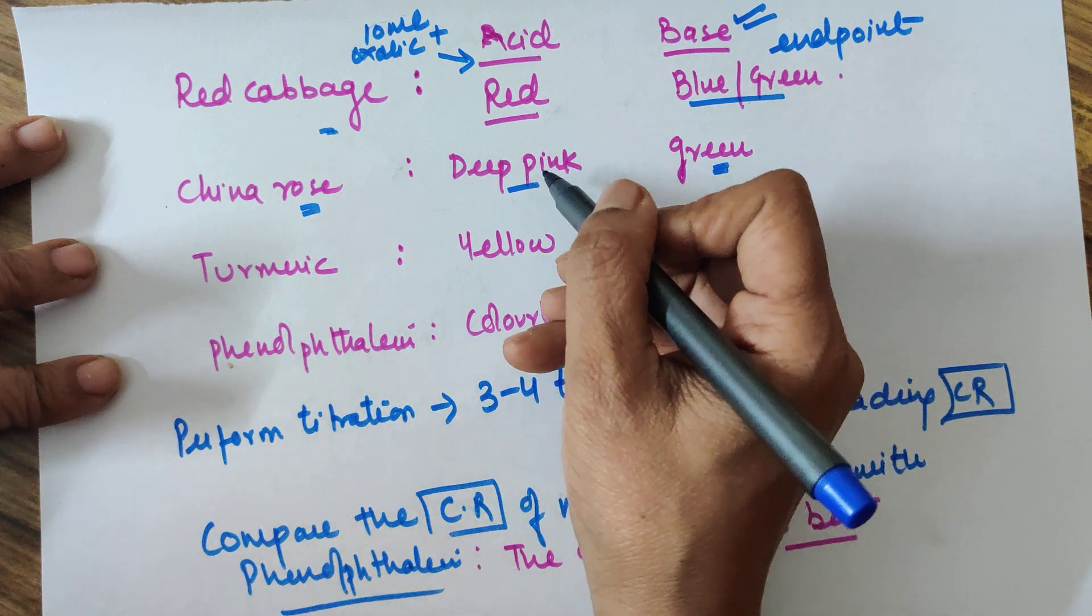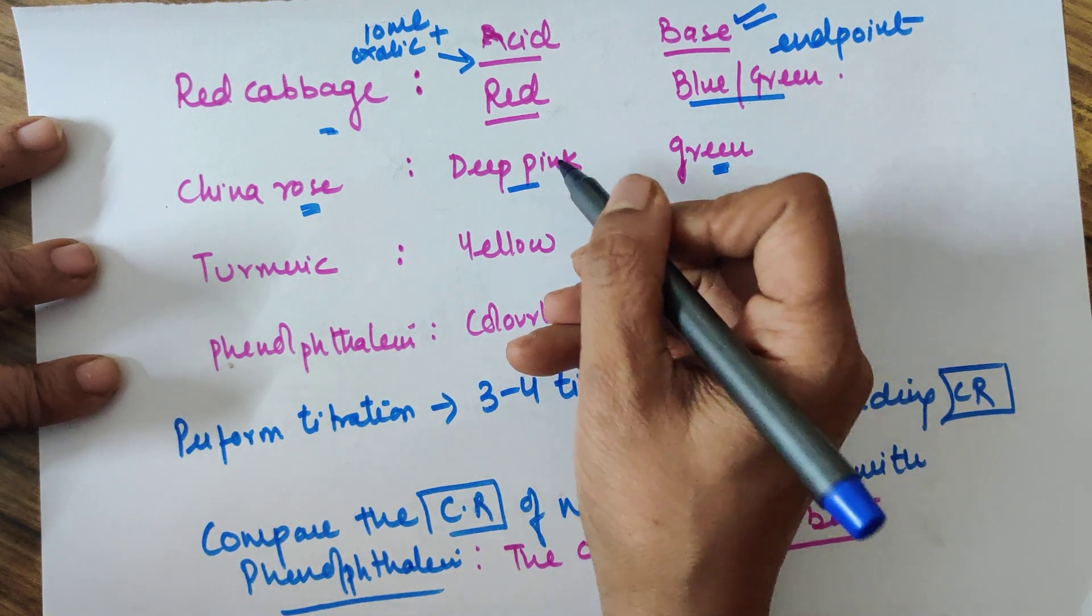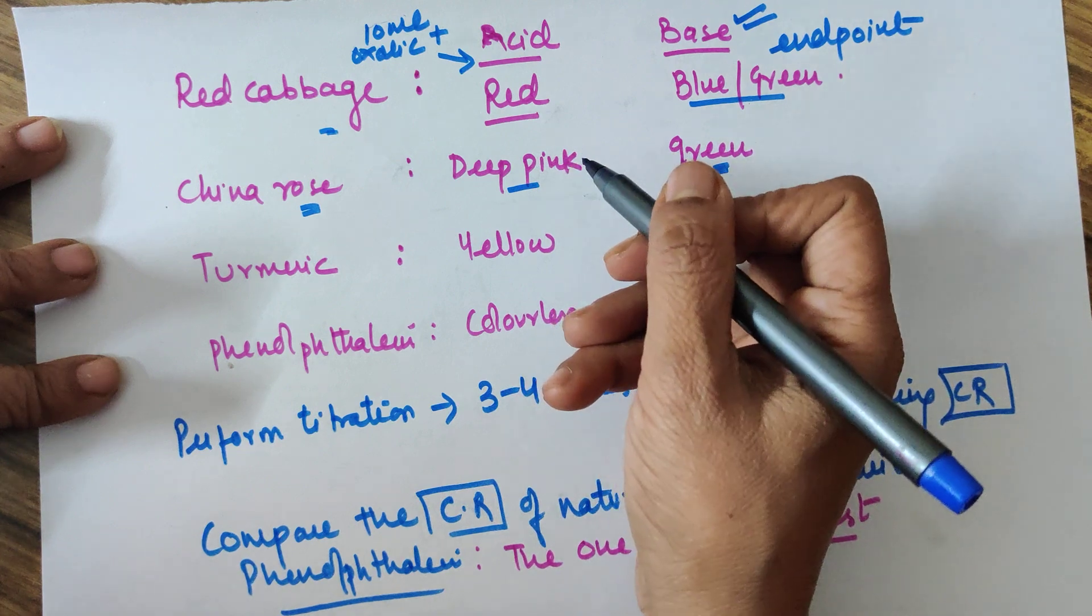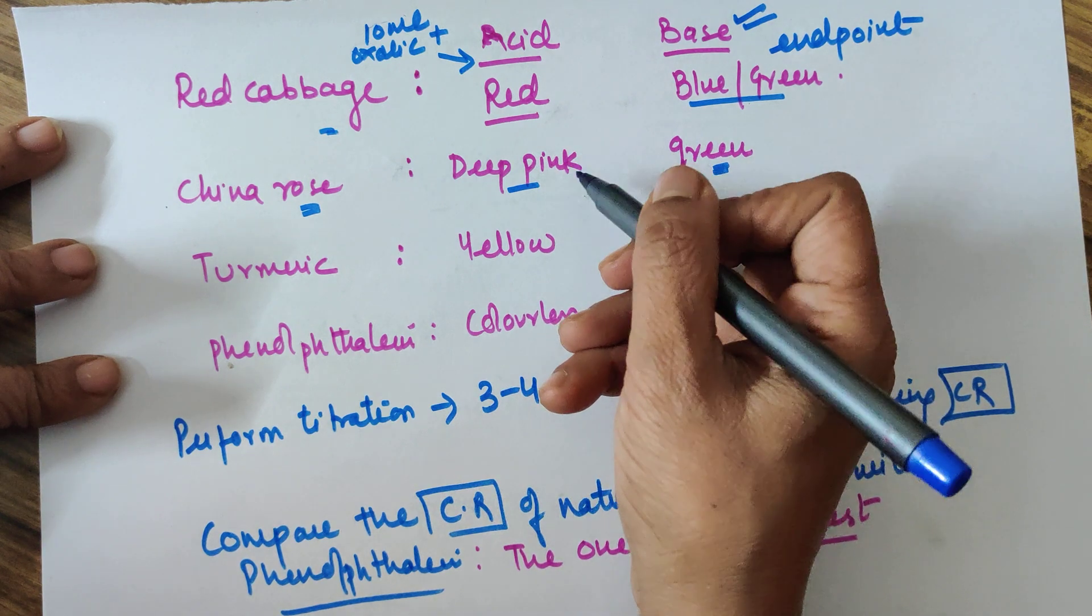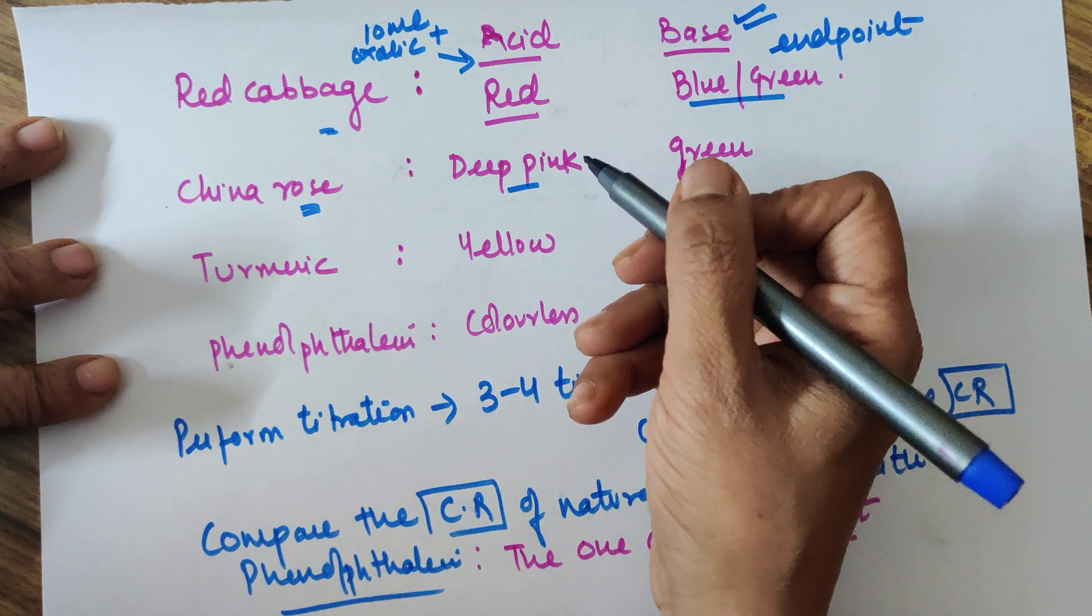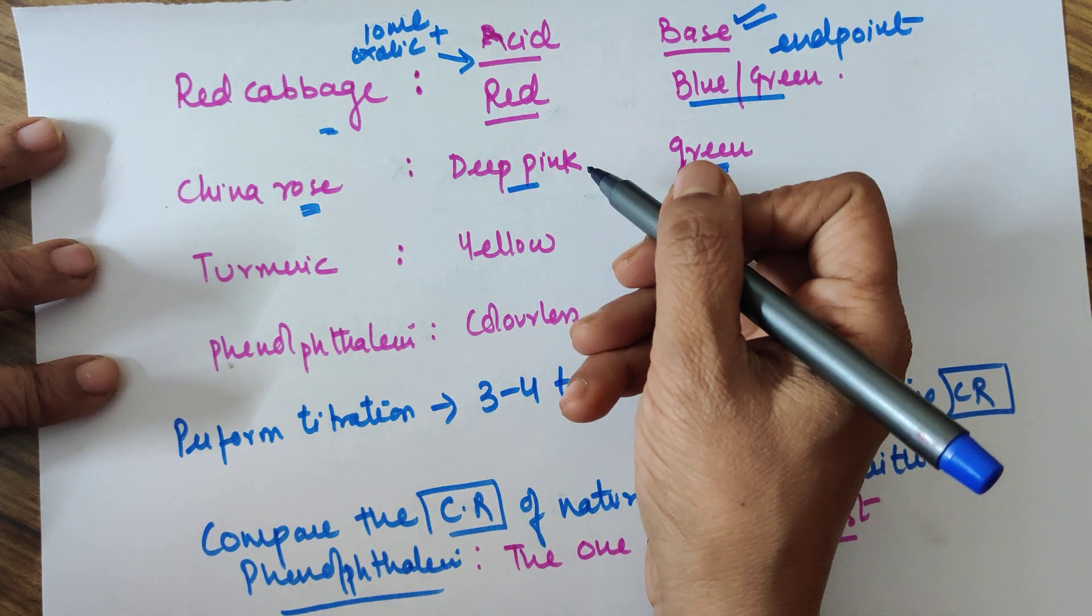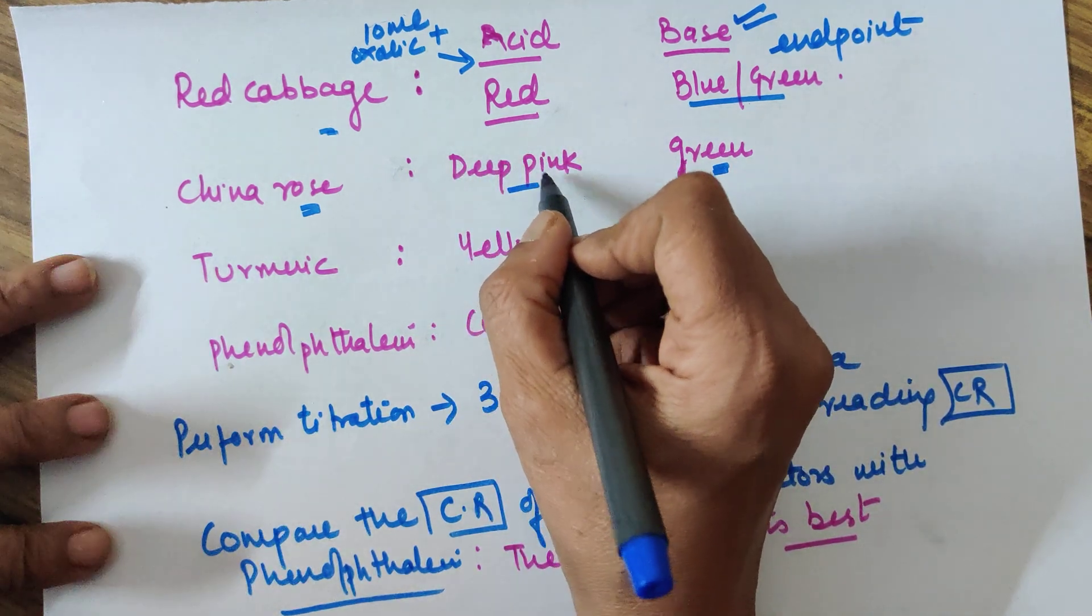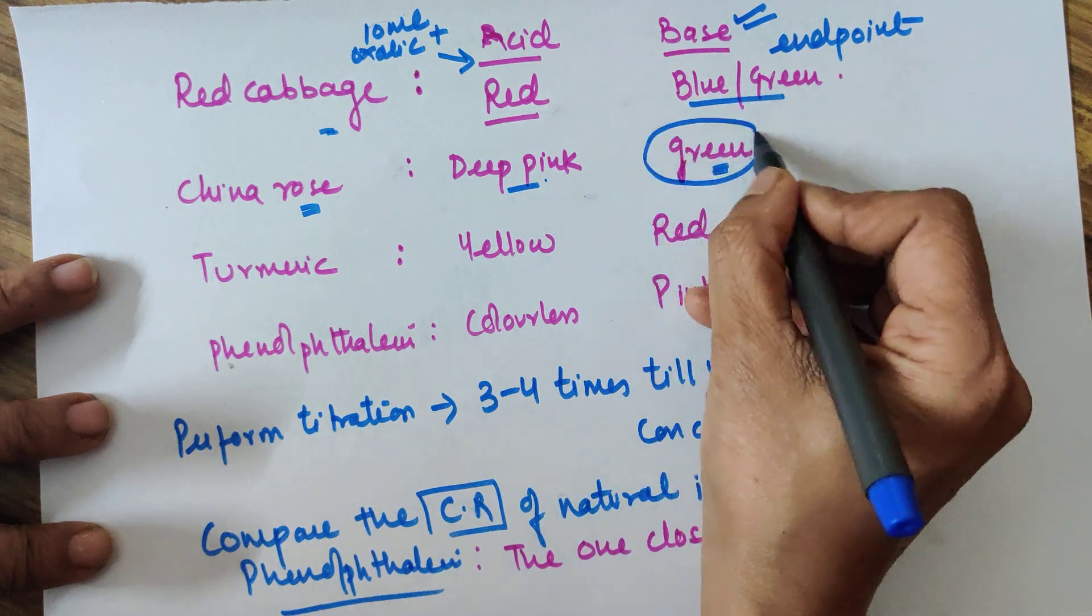If it's not deep pink, please add more amount of the indicator because these are natural indicators. They might not have been prepared very well by you. You may have to require more amount of indicator, or else concentrate the indicator solution if you want to use two or three drops only. You can add more amount of indicator solution because you need to have this color to start the titration. When you end the titration, when will you stop? When the color changes to green.